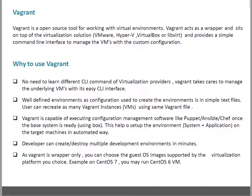Vagrant is also capable of executing configuration management software like Puppet, Ansible, and Chef once a base system is ready. It means Vagrant has functionality that allows it to be integrated with any configuration management software, which means you can run your Ansible playbooks or Puppet jobs on your target machine. So that's again a helpful feature.